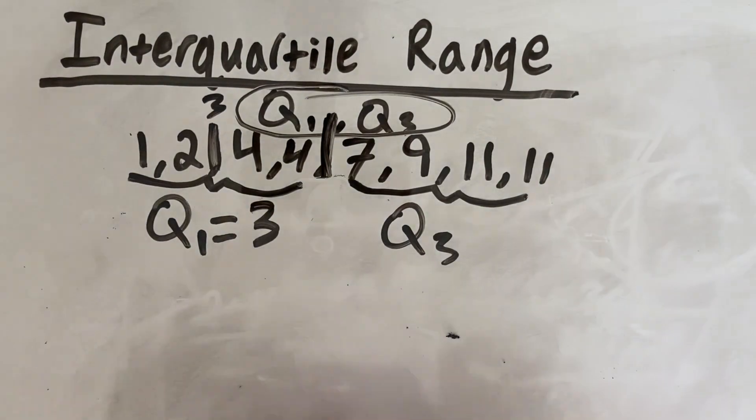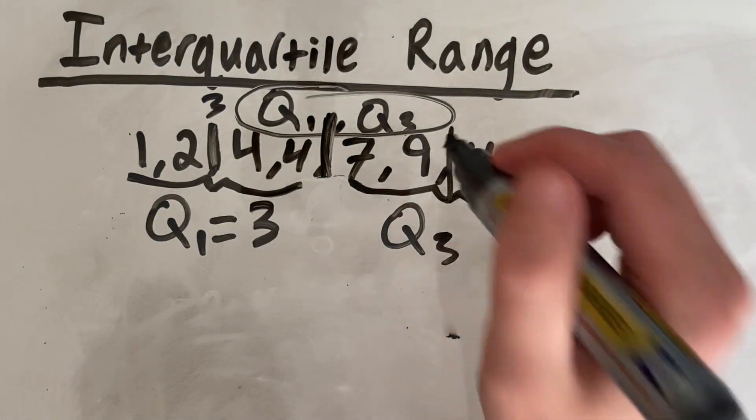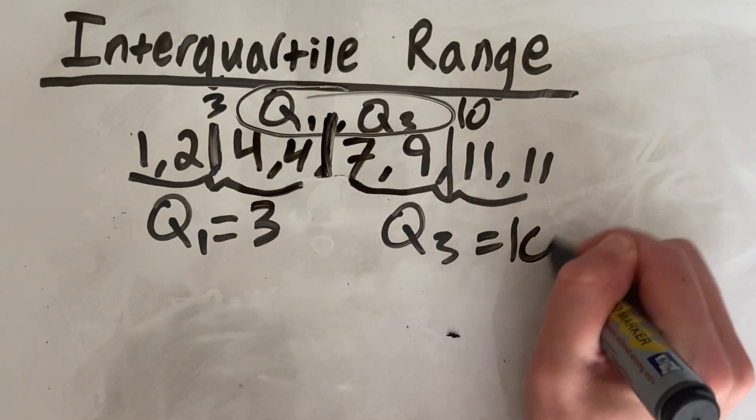And then we'll do the same for Q3. So we have our middle number here, which is in between 9 and 11. So that is 10. So Q3 equals 10.